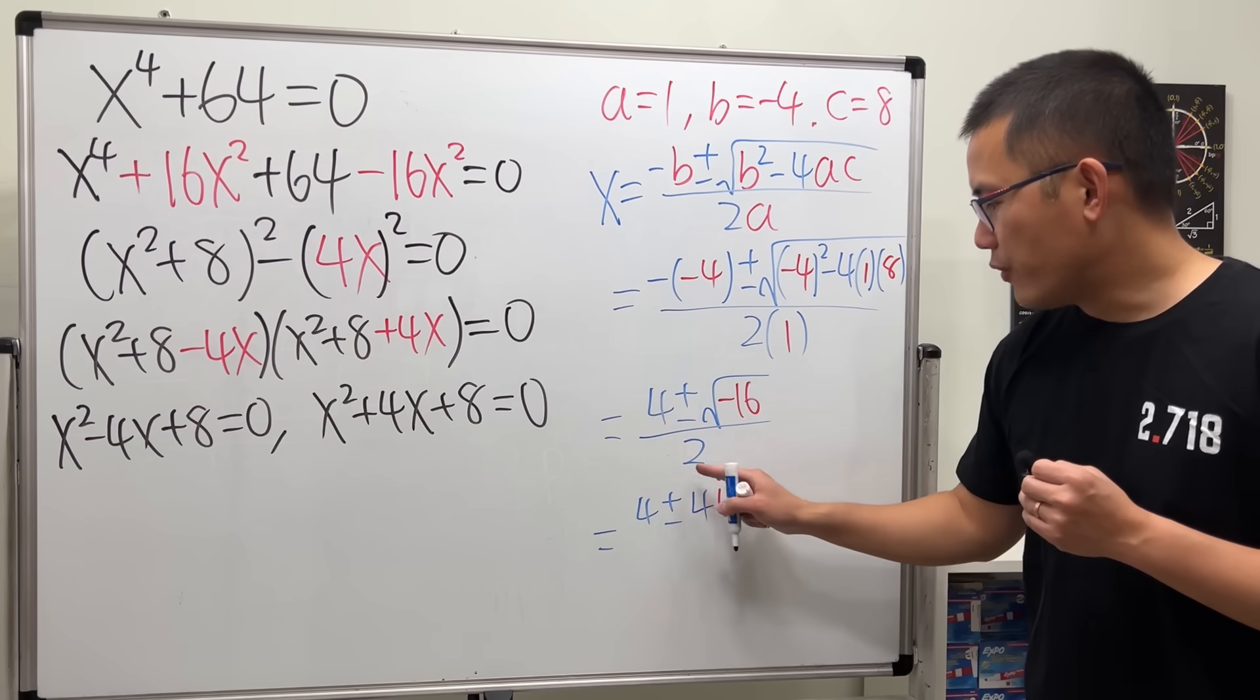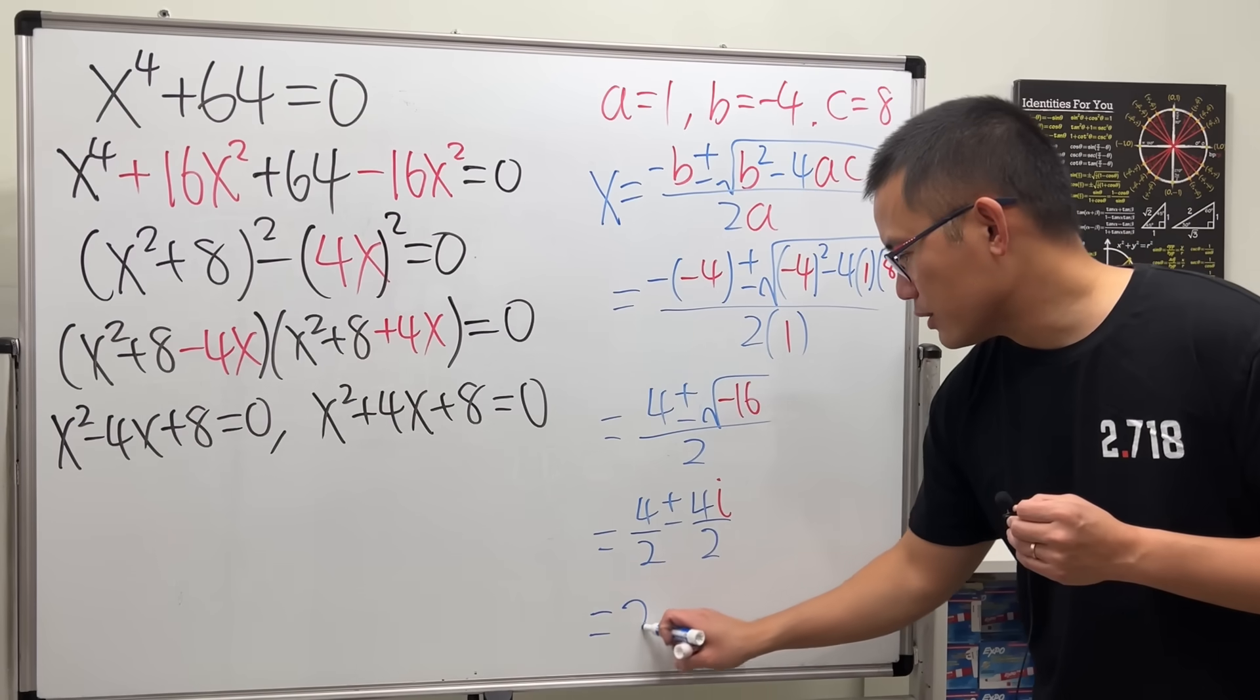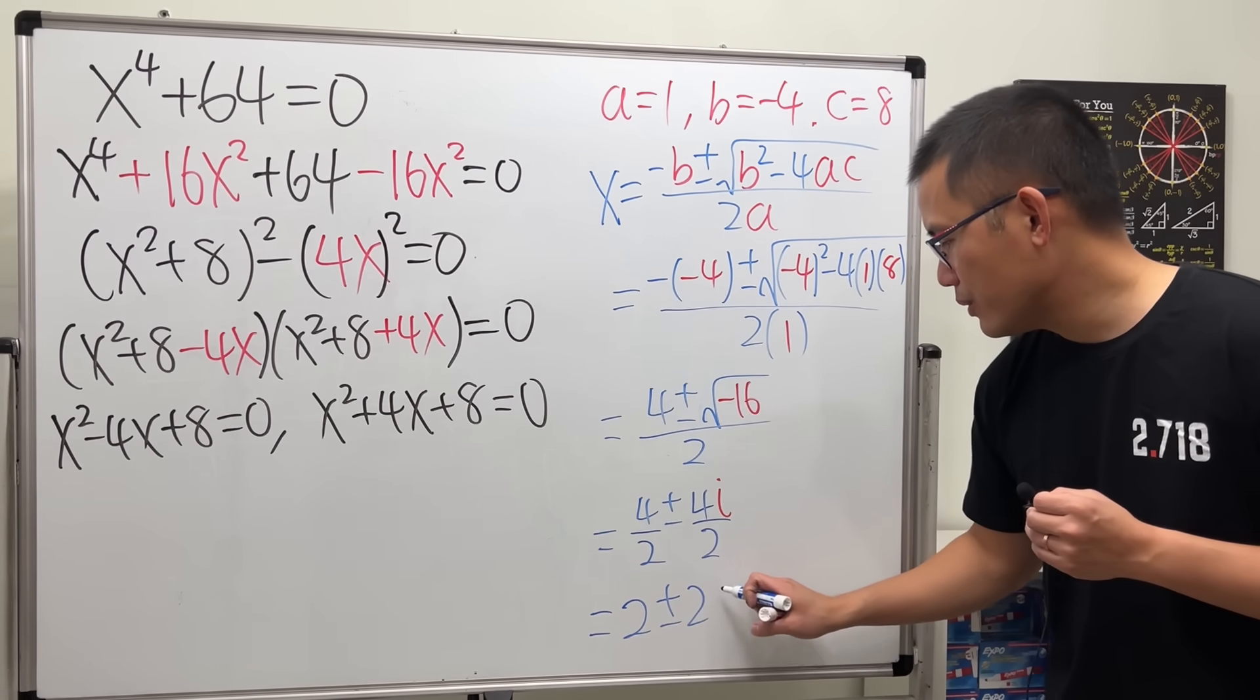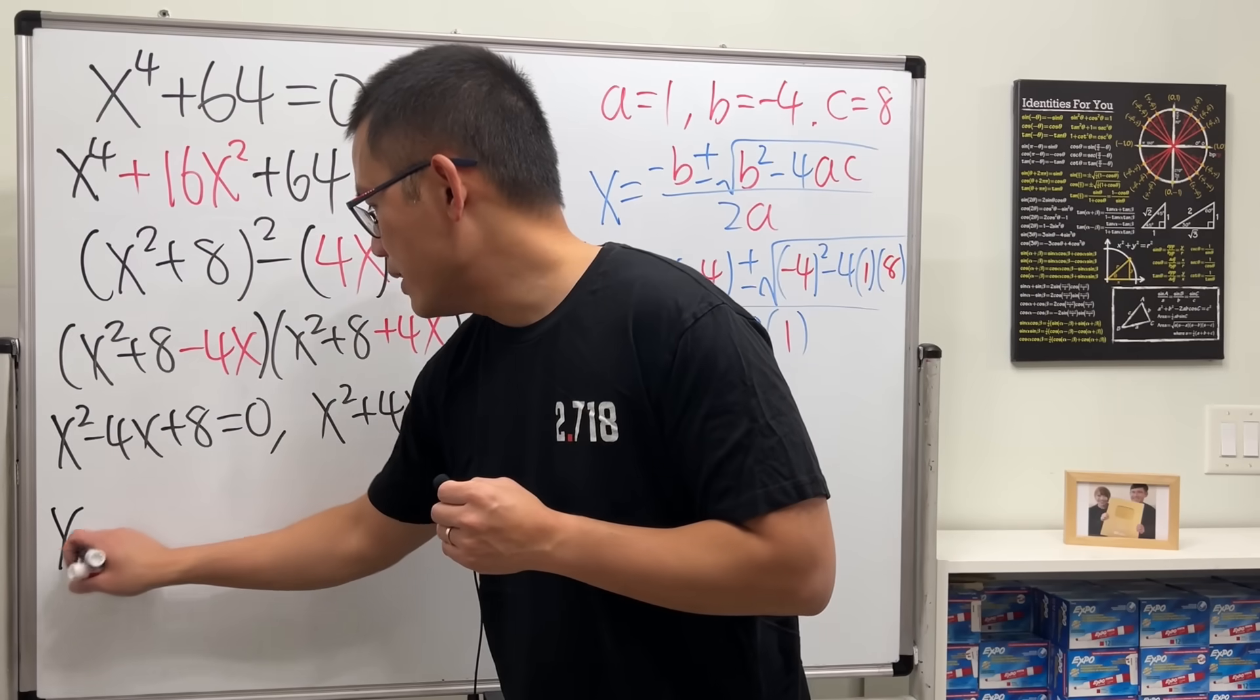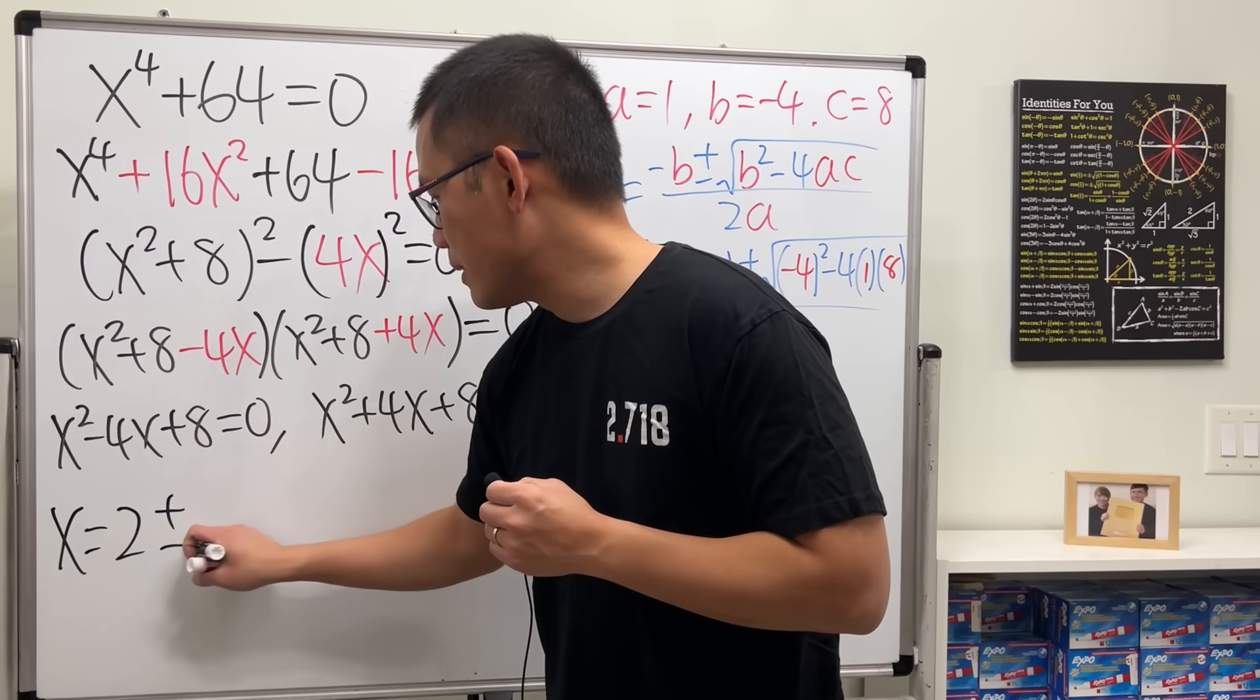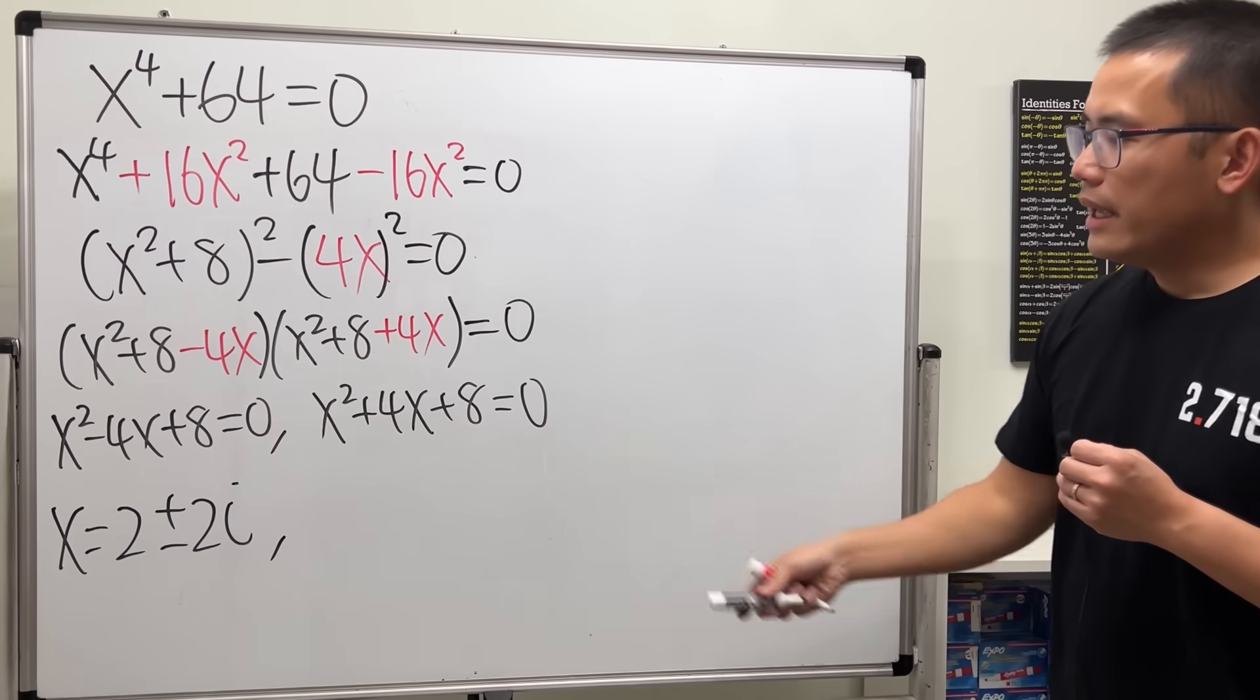And then, over 2, it's the same as over 2 here, over 2 here. So, finally, we see that's just 2 plus or minus 2i. So, from here, we get two answers: 2 plus or minus 2i.